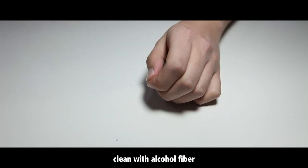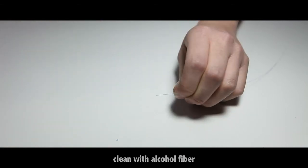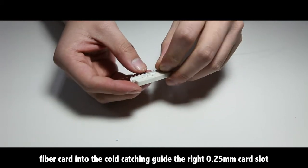Use the Miller 0.25mm clamp strip to remove the optical fiber coating. Clean with alcohol fiber.